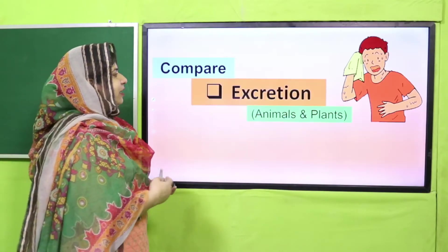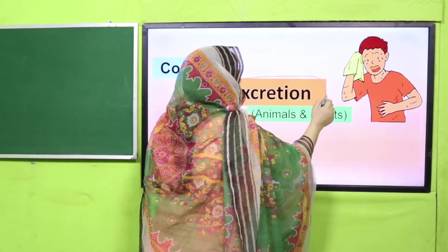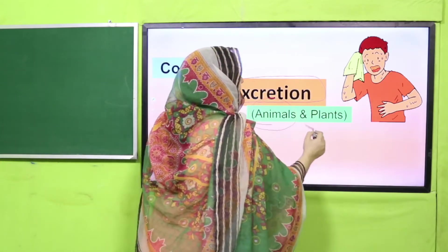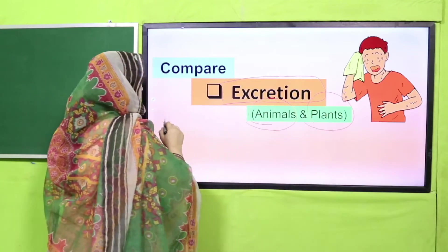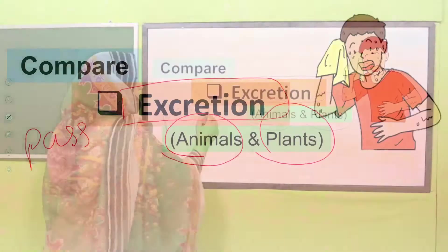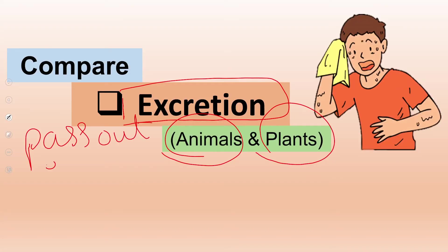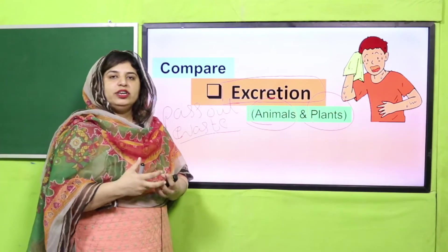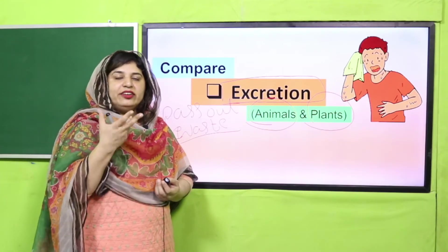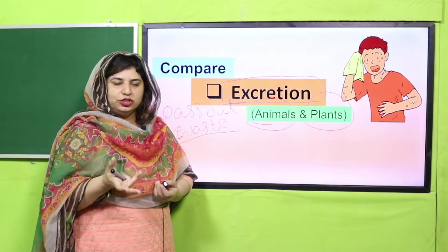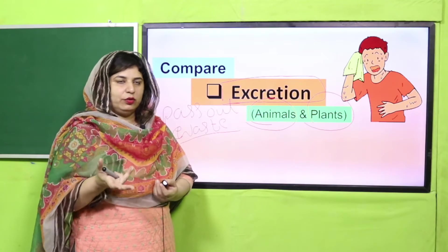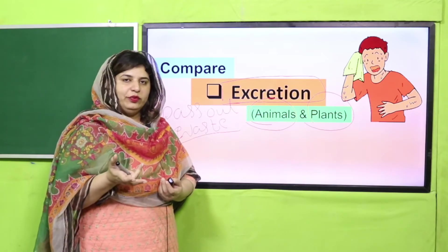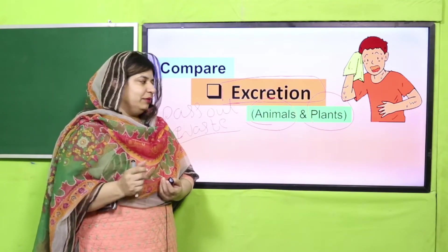If we compare excretion in animals and plants — what is excretion? Excretion is to pass out extra waste from the body. In our body, those waste materials produced during life processes are excreted from the body. How do we pass out that waste, and what are those wastes? We will compare that in animals and plants.